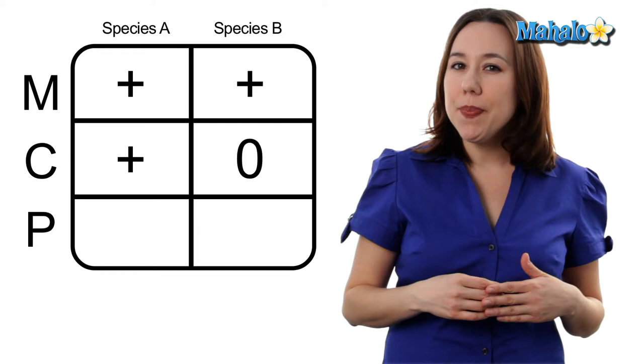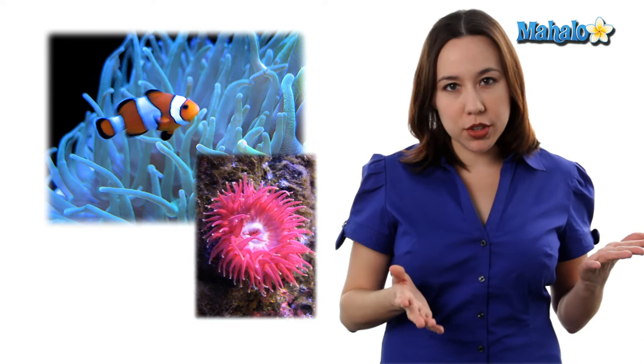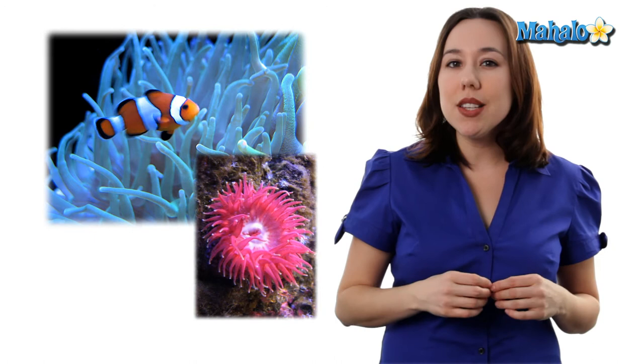A real-world example of this is anemone fishes and sea anemones. You remember Little Nemo? Well, those anemone fishes get a benefit. They get protection from the stinging cells of the sea anemone. The sea anemone is not hurt or benefited by this interaction, though.